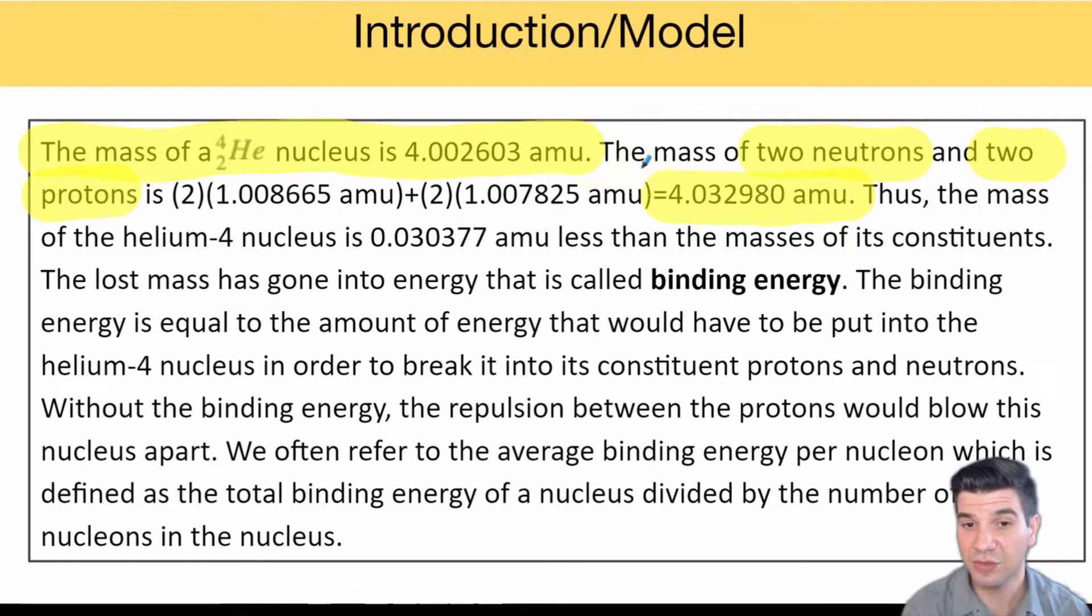Notice that these two do not match. The constituent parts actually have a greater mass than the combined atom. The mass of the helium-4 nucleus is 0.030377 amu less than the mass of its constituent parts.